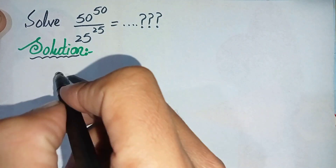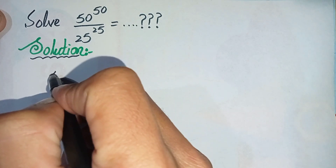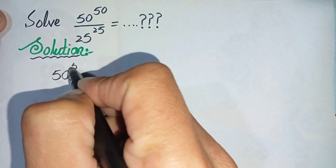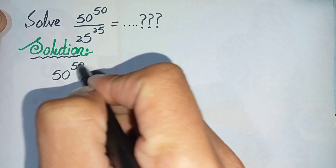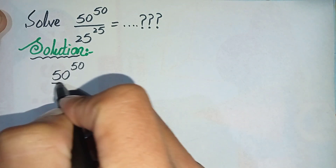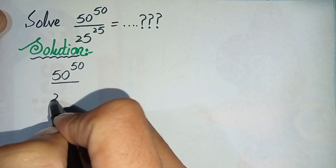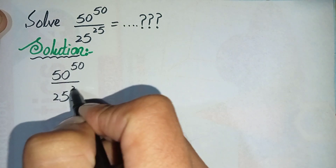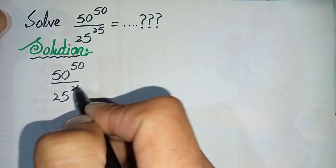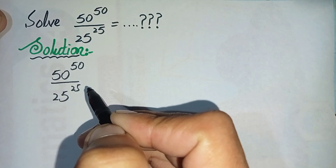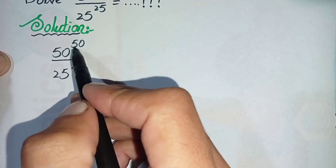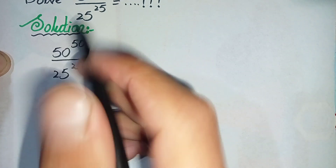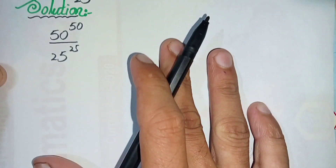The question is 50 raised to power 50 divided by 25 raised to power 25. In the next step I will split this 50 over this 50.